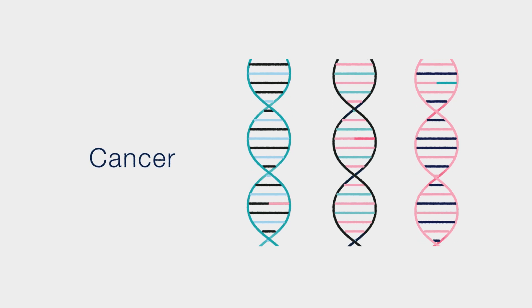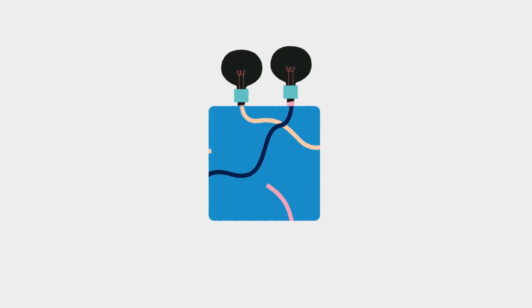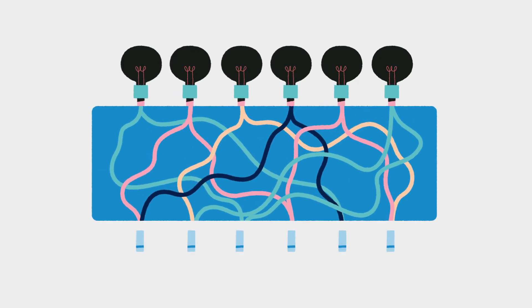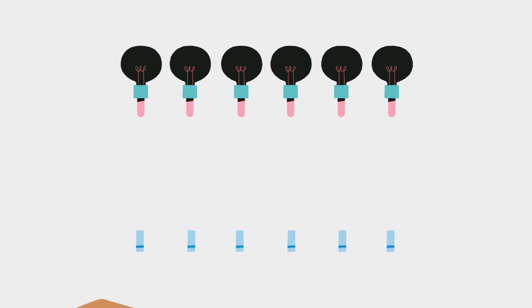But other conditions, like cancer, are much more complicated and involve the interplay of many genes. The genetics of these diseases is like a tangle of wiring scientists can't see, with many switches controlling many light bulbs.